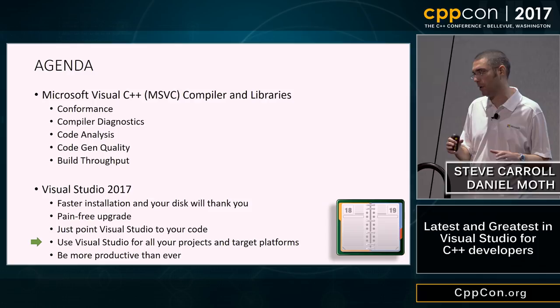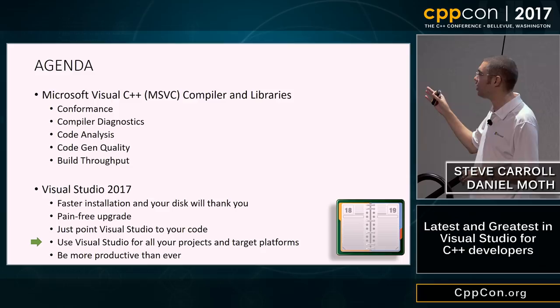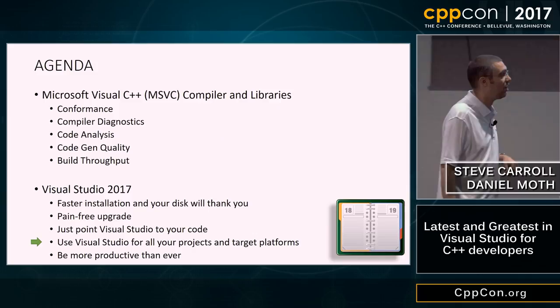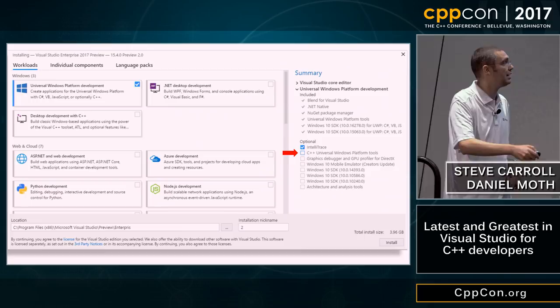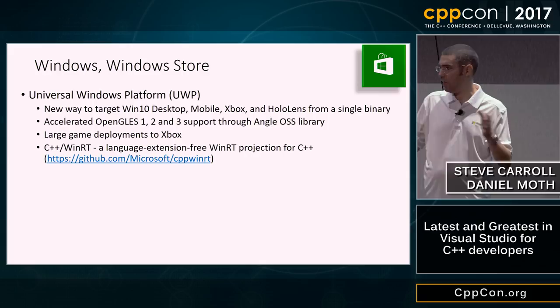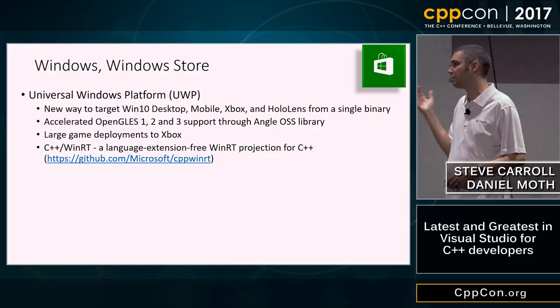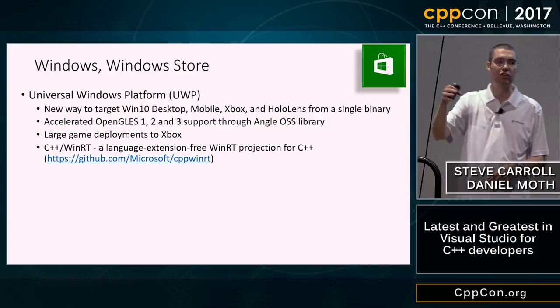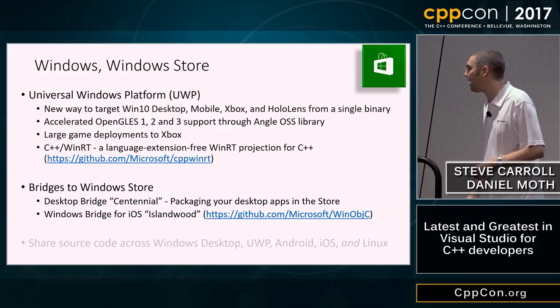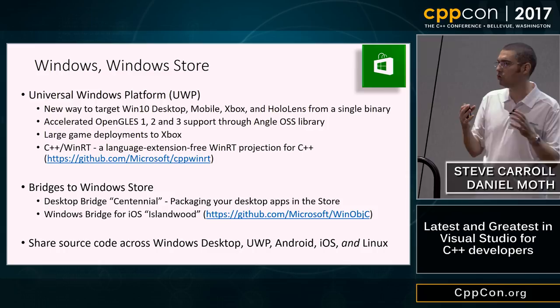Let's look at the other workloads in the VS 2017 installer. For Universal Windows Platform development, you need to check the C++ box — it's not checked by default. We have a unified Windows store where a single binary runs on desktop, mobile, Xbox, and HoloLens, adapting at runtime to the form factor. Also notable: C++/WinRT has a session this week at CppCon. We've also had the ability to share code across Android, iOS, and Windows from Visual Studio, and new this year is Linux targeting from that same setup.